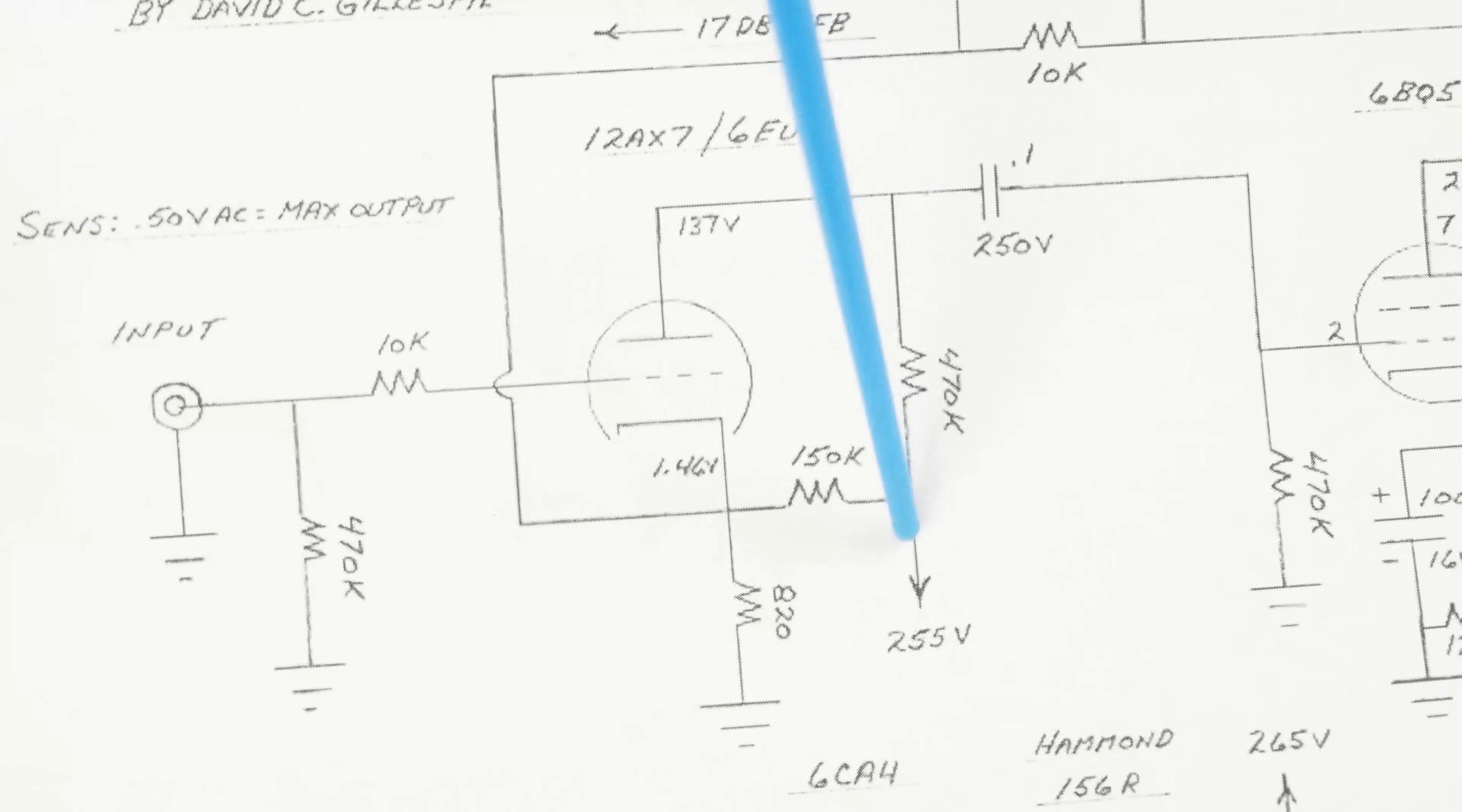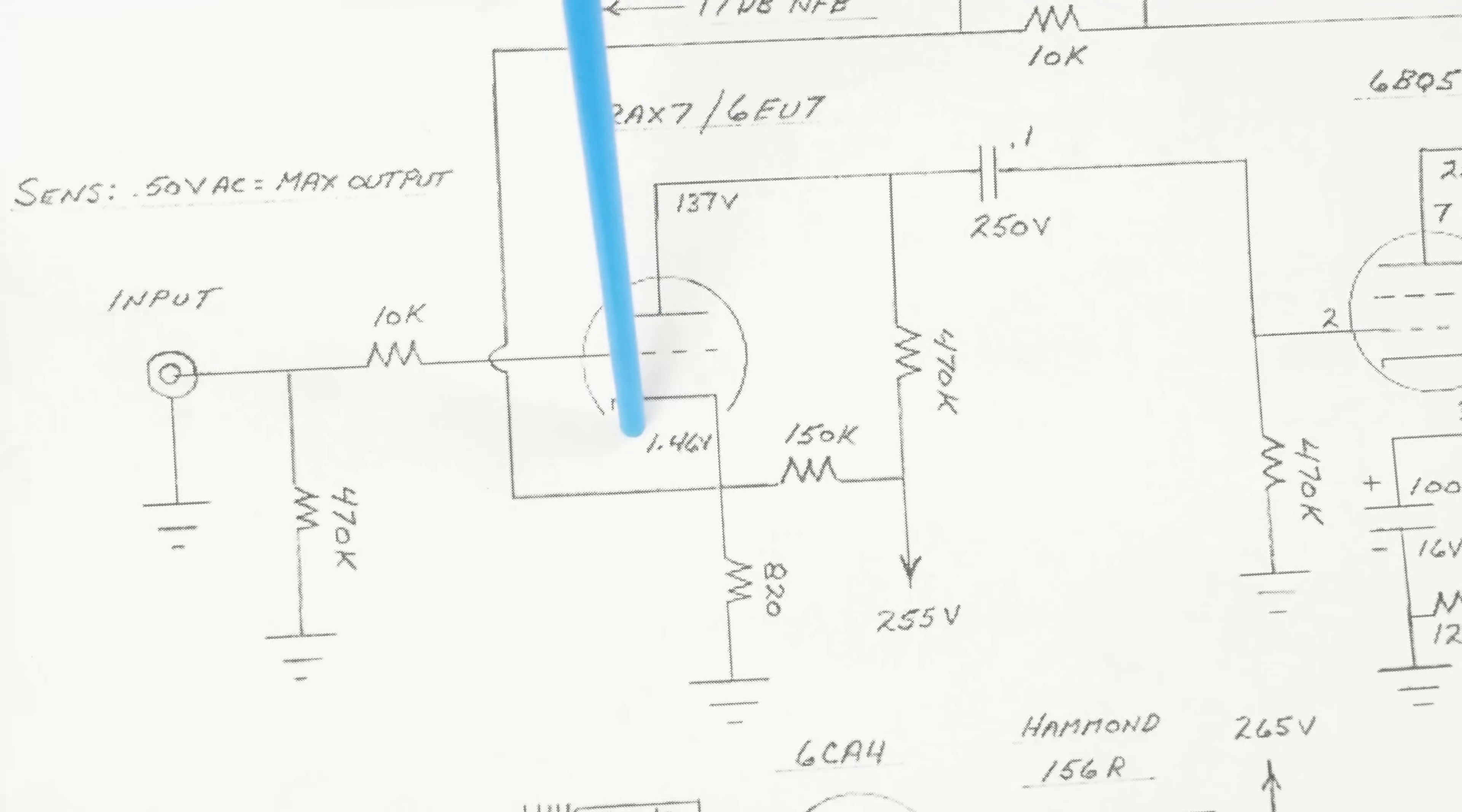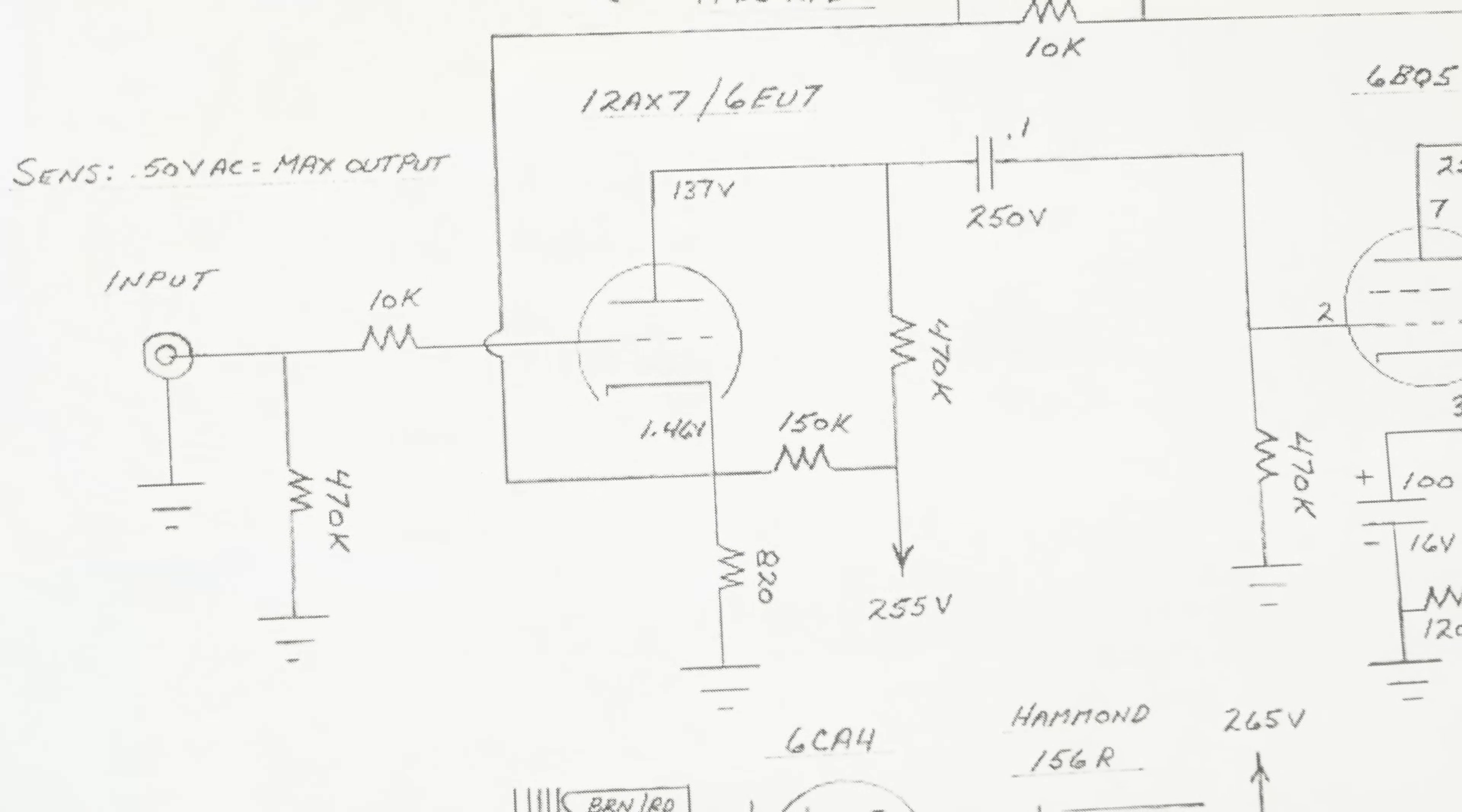So it goes to this 470K resistor, it goes to the plate, and then we've got this 150K resistor that creates the voltage divider to ground through this 820 ohm resistor. That's going to help get us to 1.4 volts here on the cathode, without having to use a really high value cathode resistor.